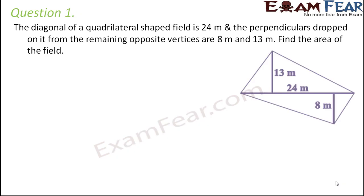Question number 1. The diagonal of a quadrilateral shaped field is 24 meters and the perpendiculars dropped on it from the remaining opposite vertices are 8 meters and 13 meters. Find the area of the field.